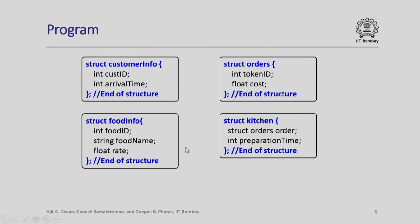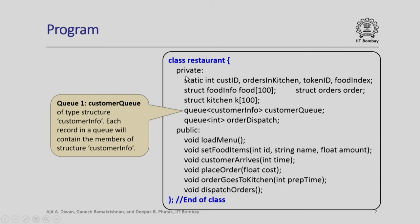Let us look at the program we will write. First, the different structures: the customer_info struct has customer_id and arrival_time; the food_info struct has food_id, a string for the food name, and the rate; the orders struct has token_id and total_cost; and the kitchen struct contains a field of type orders along with preparation time. So for each order there is a preparation time associated with it as part of the kitchen structure. We will also have a static customer_id for assigning IDs, orders_in_kitchen, token_id, and an array of type kitchen of size 100 and food_info of size 100.